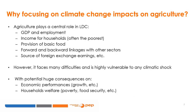Why is focusing on climate change impacts on the agricultural sector relevant? Agriculture plays a central role in economic and social development of less developed countries. One, it accounts for a large share of the gross domestic product and labor force. Two, it provides income to a majority of the population, therefore contributing to poverty alleviation. Three, it supplies the bulk of basic food for subsistence needs, contributing to food security. Four, it has strong forward and backward linkages with other sectors of the economy.